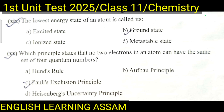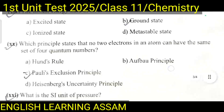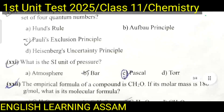Question number twenty: Which principle states that no two electrons in an atom can have the same set of four quantum numbers? A. Hund's rule, B. Aufbau principle, C. Pauli's exclusion principle, D. Heisenberg's uncertainty principle. The correct answer is C — Pauli's exclusion principle.